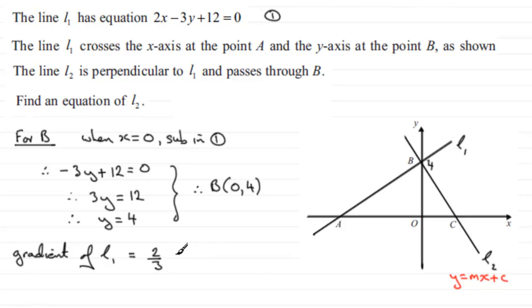So, therefore, a perpendicular gradient should be found out by knowing that the product of two perpendicular gradients always comes to minus 1. So, we can say, therefore, the gradient of line L2 must equal minus 3 over 2. Just flip the fraction upside down and then change the sign. And you can see that if you multiply those two numbers together, you get minus 1, the perpendicular gradient rule.